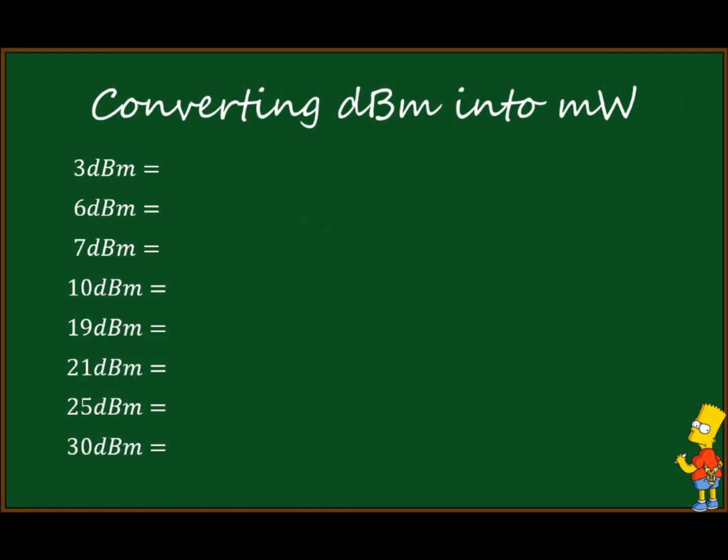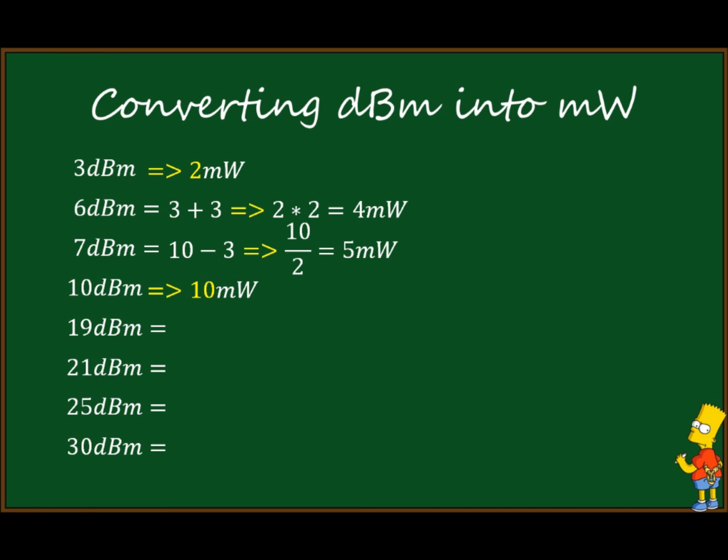Now we will convert all of these examples using just those two results: 3 dBm → 2 mW and 10 dBm → 10 mW. All others will be made with combinations of those two values. For 6 dBm: 6 = 3 + 3, and by our rule summing becomes product, so 3 + 3 converts to 2 × 2, which is 4 milliwatts. For 7 dBm: 7 = 10 − 3, so that converts to 10 / 2 = 5 milliwatts.